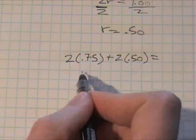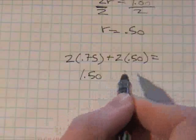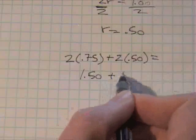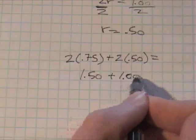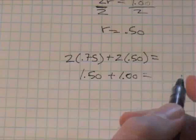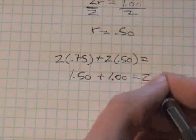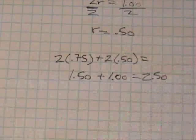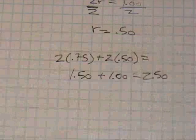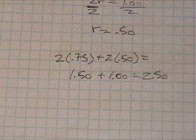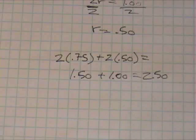So 2 times 0.75 plus 2 times 0.5 should equal 2.50. This together is a dollar 50, and this is just a dollar, and that equals 2 dollars and 50 cents, which is the right answer. So we've checked it, all got it. Just remember how to look at things in terms of units and create a system of equations.